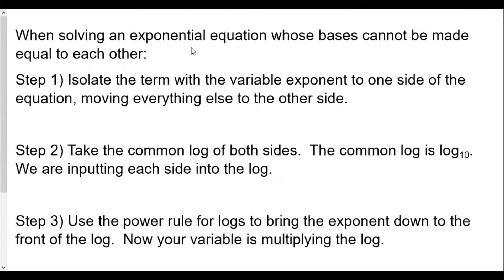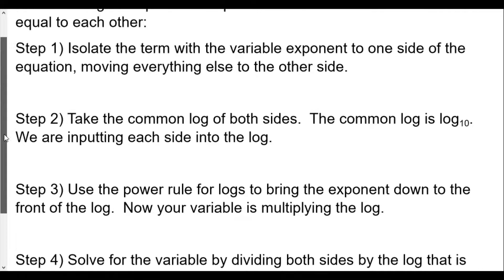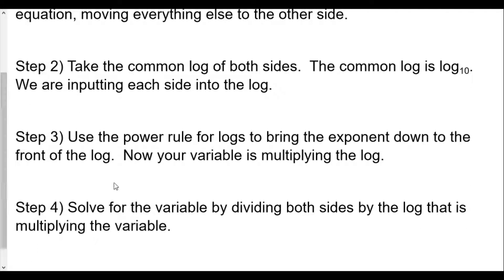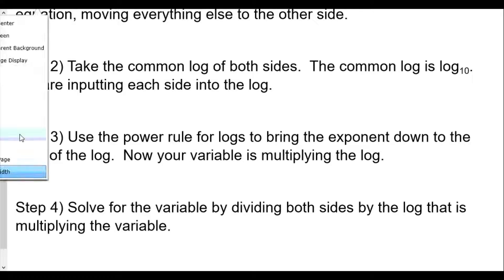Step two: take the common log (log base 10) of both sides, plugging each side into the log function. Step three: use the power rule for logs to bring the exponent down to the front of the log — this takes care of our variable. Step four: solve for the variable by dividing both sides by the log that's multiplying the variable.